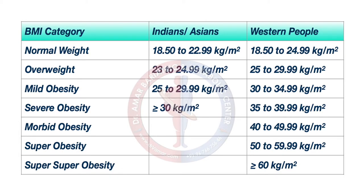These categories in foreign countries are different. In foreign countries, body mass index should be less than 25. 25 to 29.99 is considered as overweight. 30 and above is mild obesity. 35 and above is severe obesity. 40 and above is morbid obesity. If the body mass index is 50 and above, it is considered as super obesity. 60 and above is considered as super super obesity.